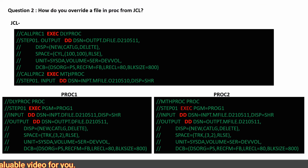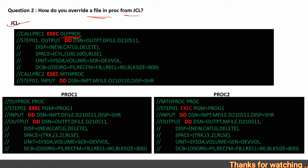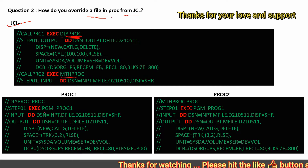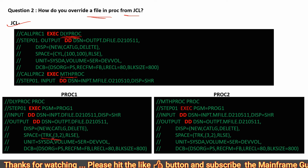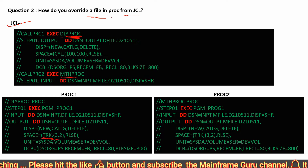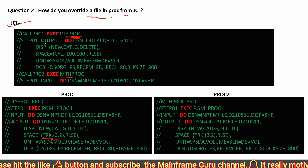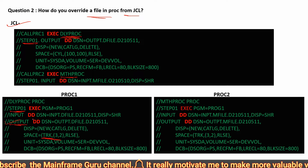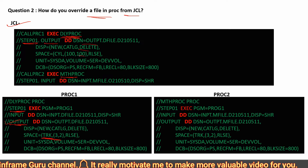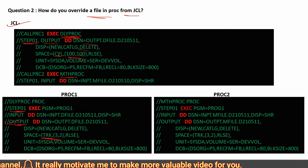Second question: how do you override a file in a JCL? In this JCL we have two programs — the daily program and the monthly program. In the daily program, the job failed because the space size was very low and the data was very large, so we want to override this file in the JCL.